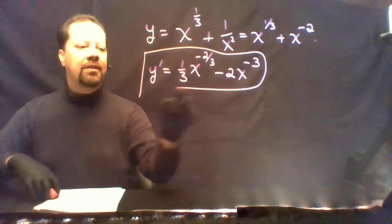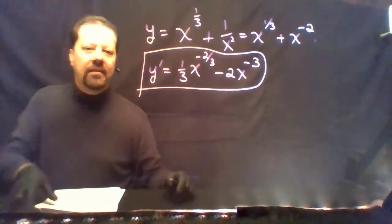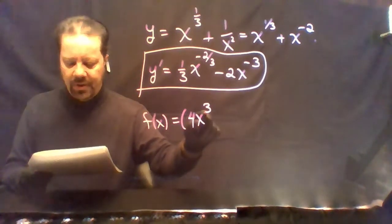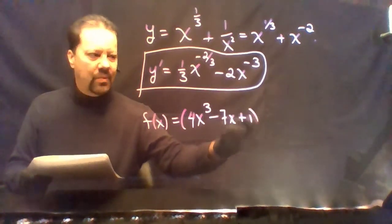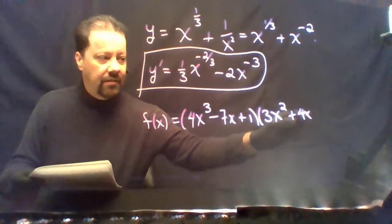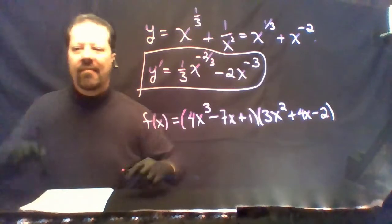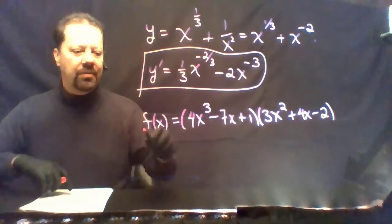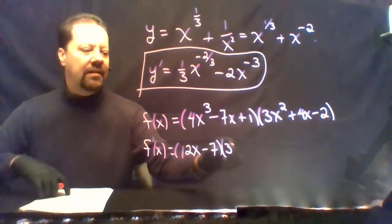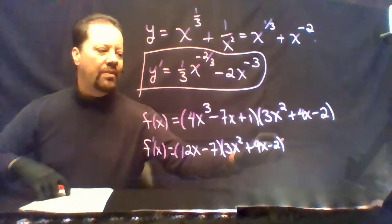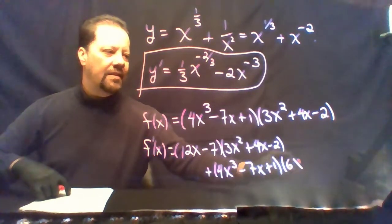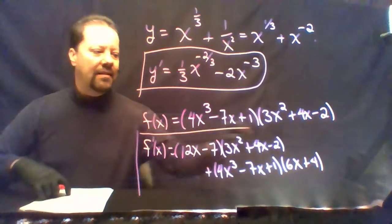Don't try to simplify any of these — just put a box around it and leave it. On the next problem, f of x equals (4x³ − 7x + 1)² times (3x² + 4x − 2). Please don't foil this out; just use the product rule. f prime of x is (12x² − 7)(3x² + 4x − 2) plus (4x³ − 7x + 1)(6x + 4). Box it — it's done.